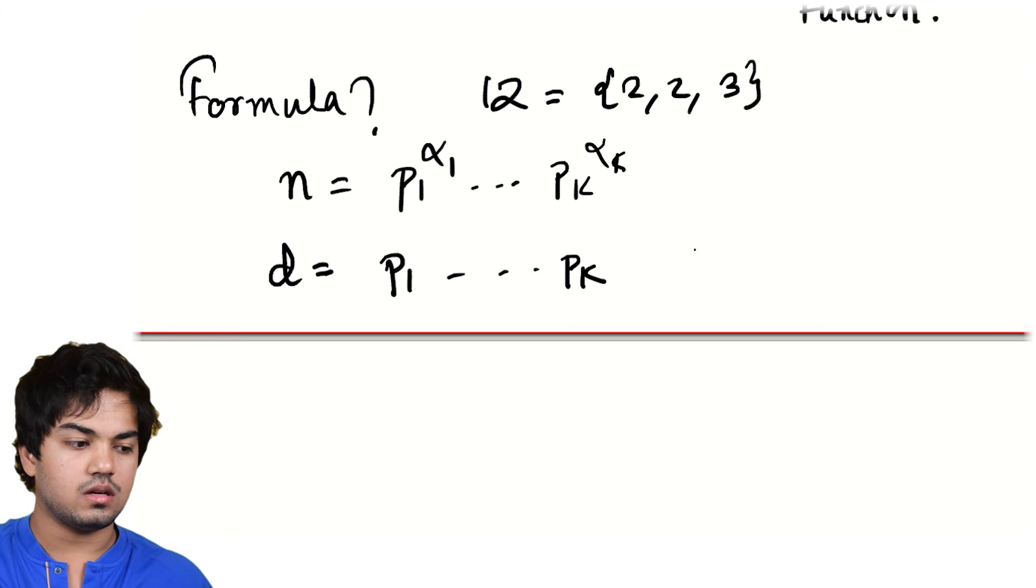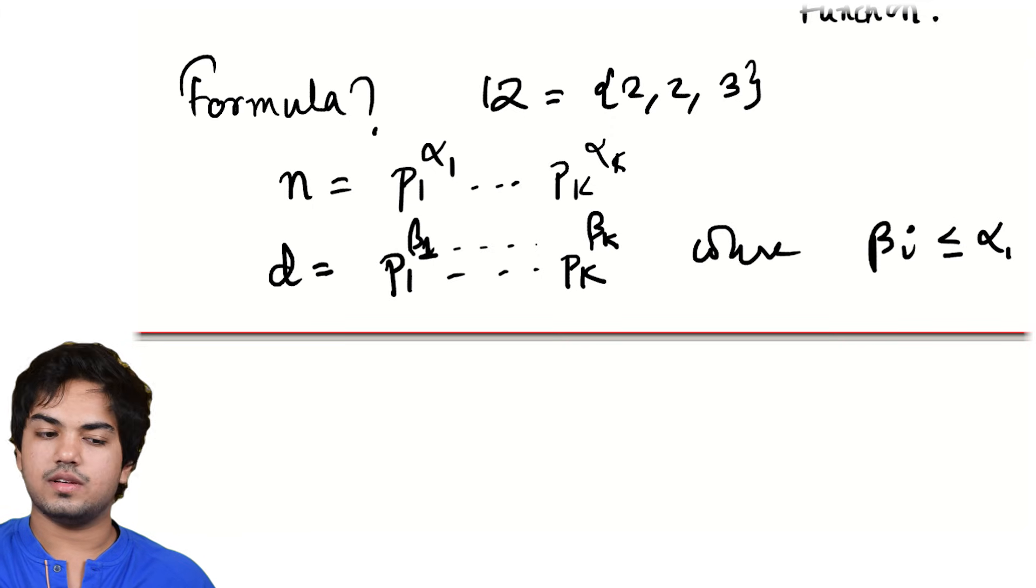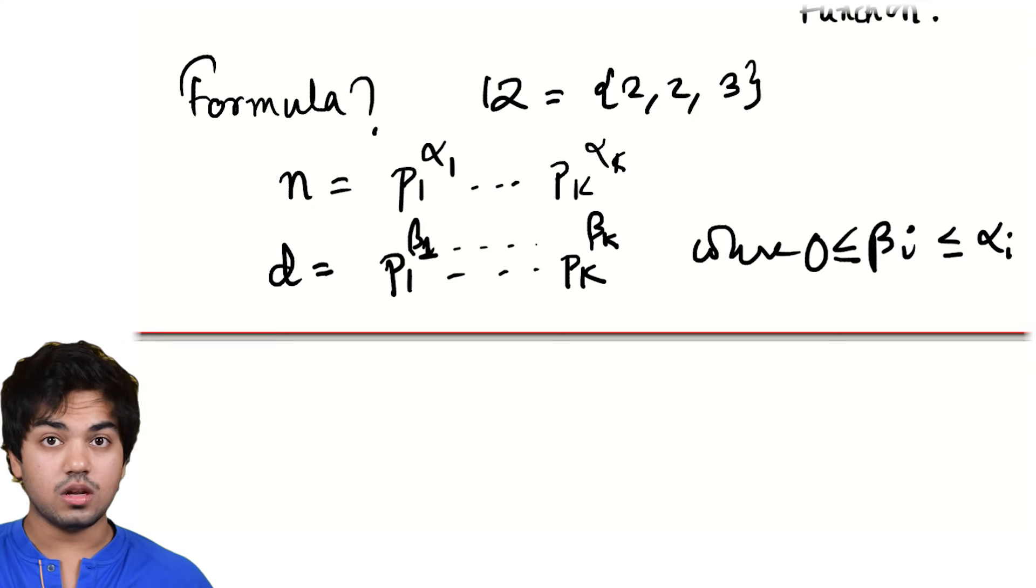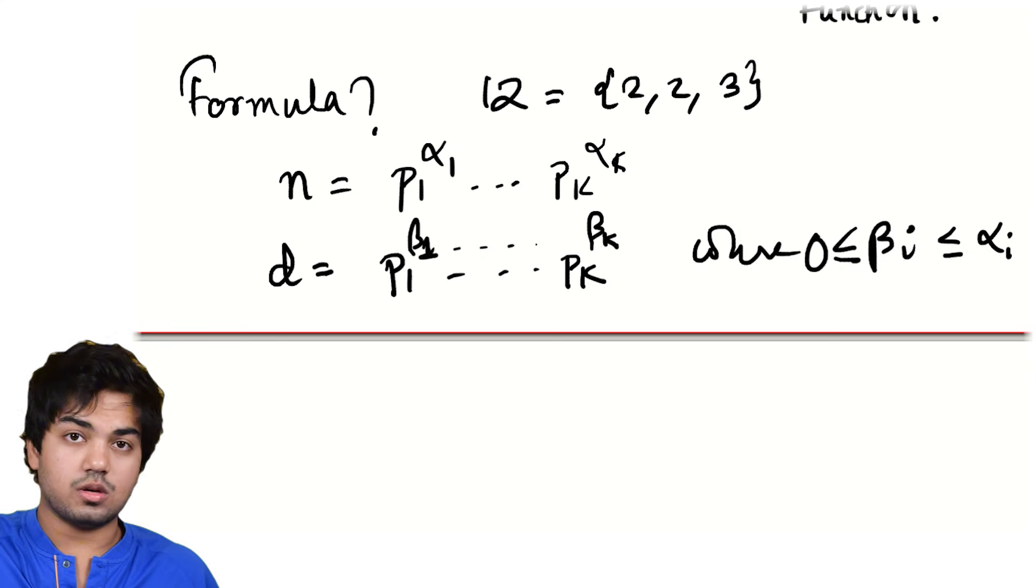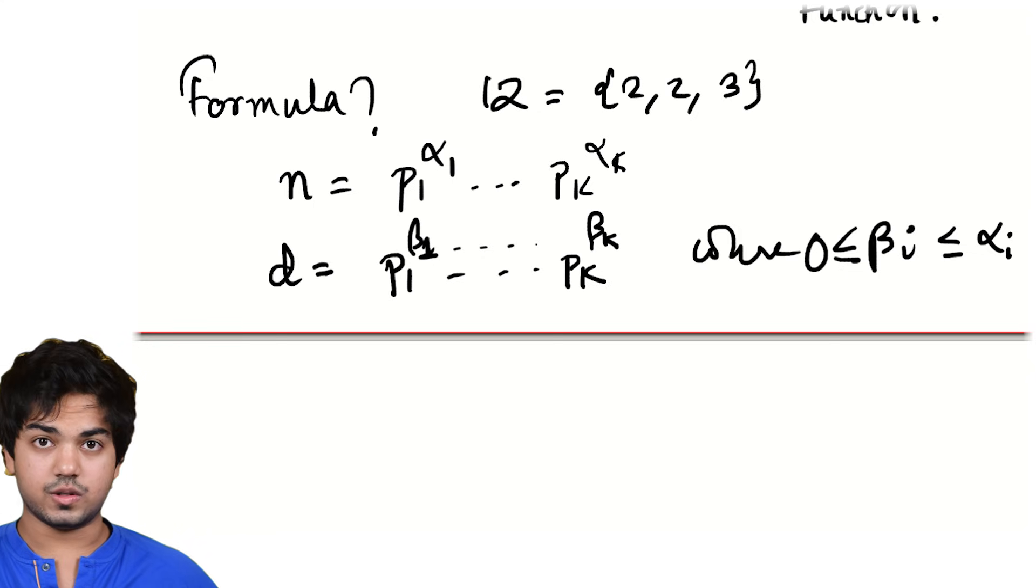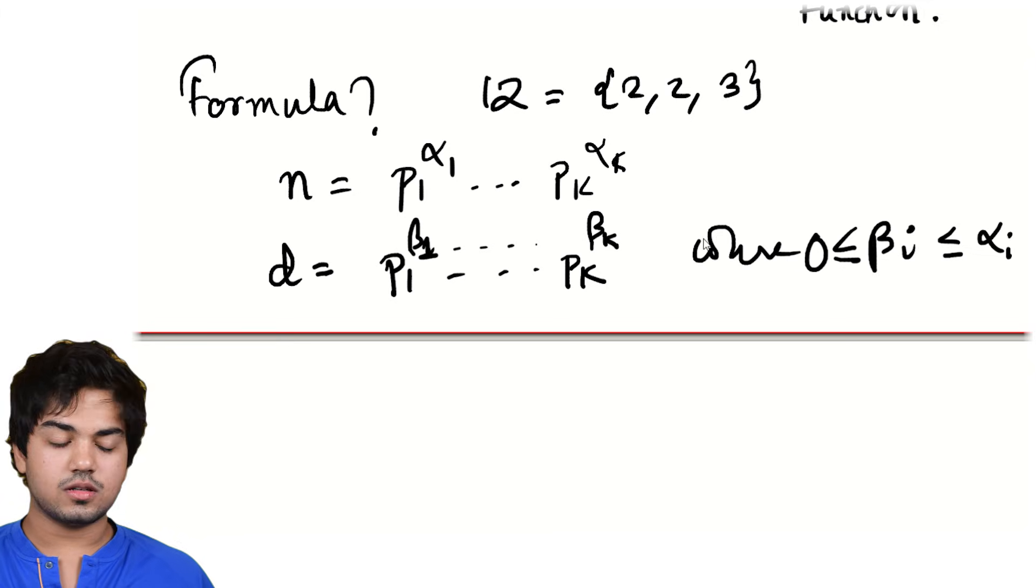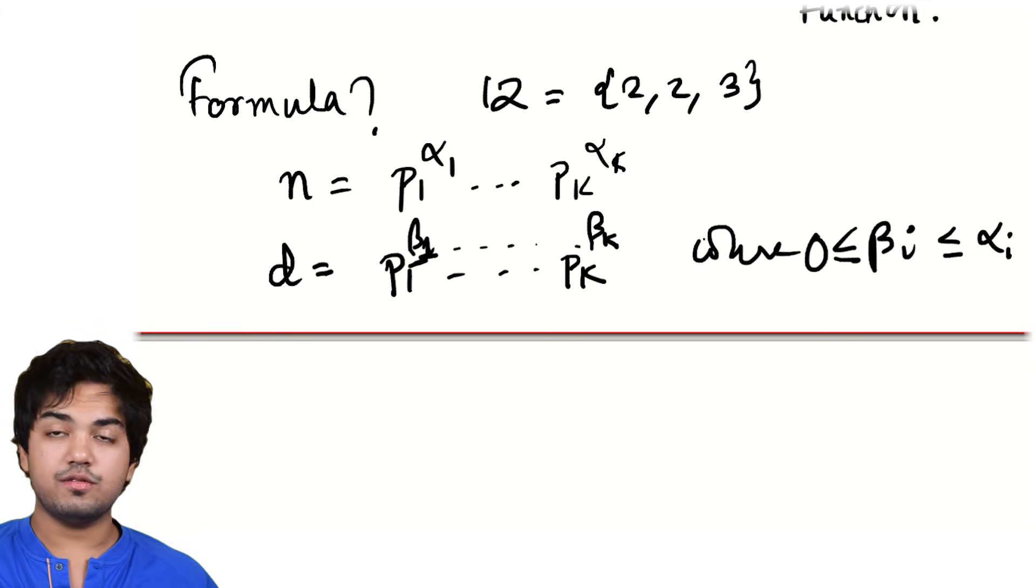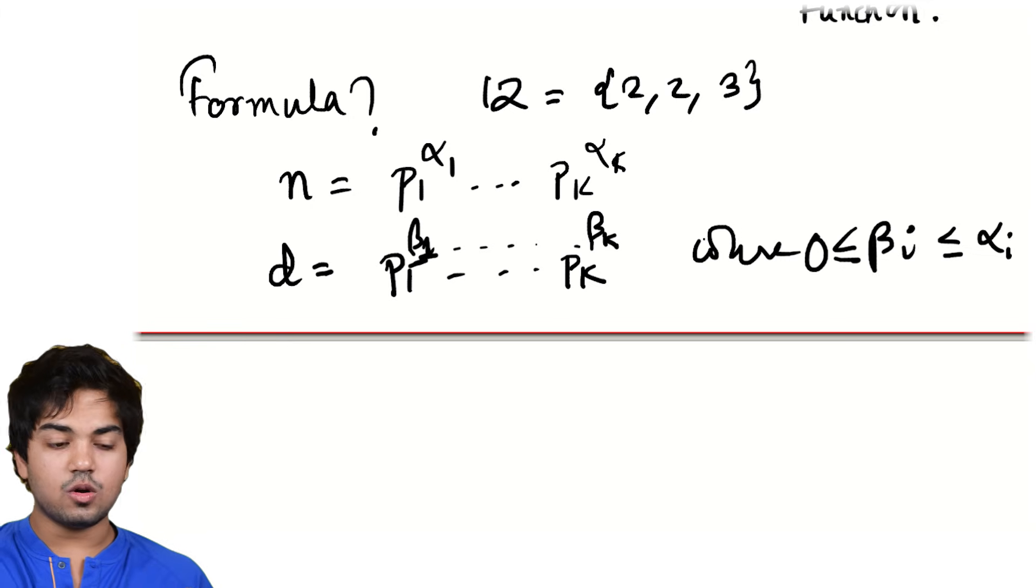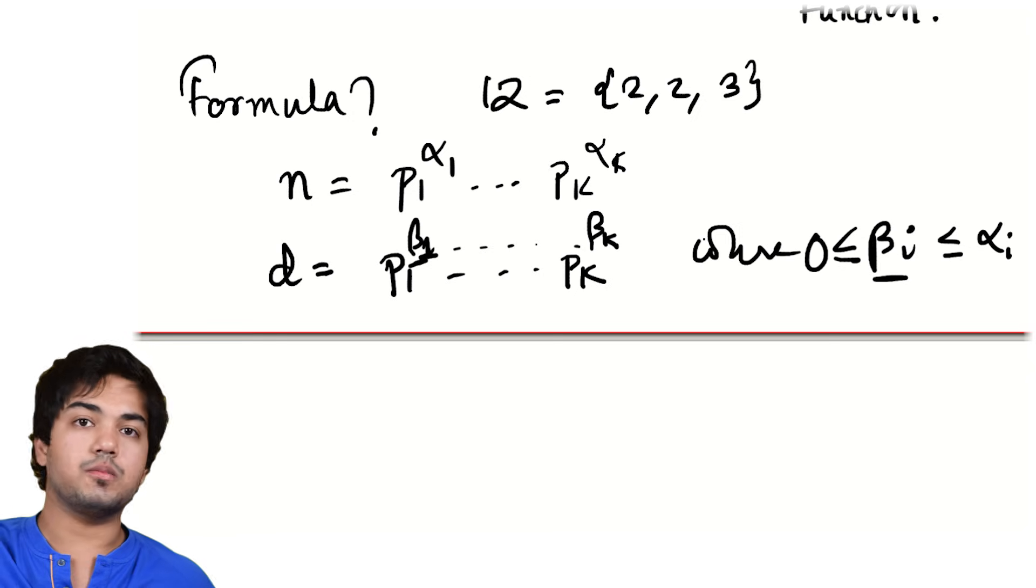To some other exponent bi, say beta one, up to beta k, where each of the beta i is less than or equal to alpha i, and greater than or equal to zero. We do allow zero. Not all primes show up in all divisors. Two is a divisor of 12. Three doesn't show up in the prime factorization of two. Same goes for four. Four is a divisor of 12. Three doesn't show up there. So not all the primes will show up for a given divisor, but at least one will, except in the case of one, which is a divisor all the time. None of the primes show up. So one corresponds to where you choose zero as the exponent for each of the primes. So you see that as you run over all possibilities of the beta i, you'll run over all the possible divisors.